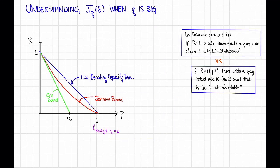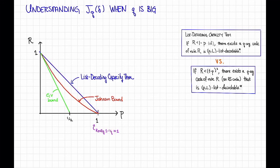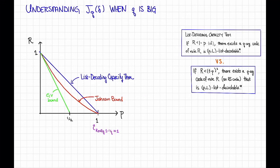Once again, we can plot these tradeoffs. Here's the list decoding capacity theorem for large q — it's just a straight line. And here's what the Johnson bound looks like. Again, the Johnson bound is not as good as the list decoding capacity theorem. However, it shares the property of guaranteeing list decodability all the way up to p equals 1 minus 1 over q, which looks like 1 on this plot since q is really large. Additionally, the list decoding capacity theorem was non-constructive — we took a completely random code — while for large q, the codes on the Johnson bound are just Reed-Solomon codes, so we have explicit constructions here.